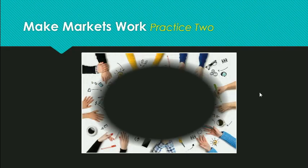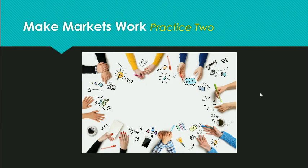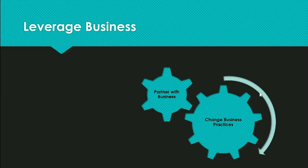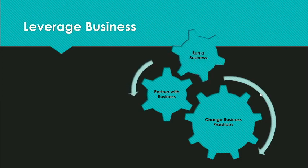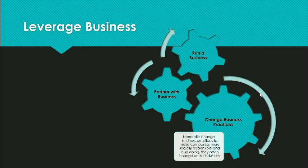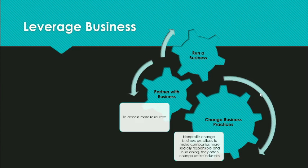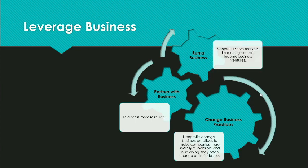The 12 organizations studied found three distinct ways to work with and through businesses to achieve more social impact, according to Crutchfield and Grant. The organizations did not seek to act like a business so much as leverage the power of business. The three practices are: change business practices to make companies more socially responsible — and by doing so they change entire industries in some cases; partner with businesses, which can mean everything from accessing donations and volunteers to creating operational alliances; and run a business. Nonprofits serve markets by running their own business — for example, as the executive director of a nonprofit, we run our own custodial and lawn care programs, which operate as a business.